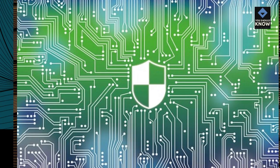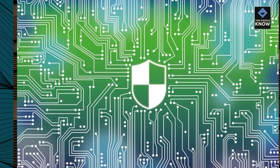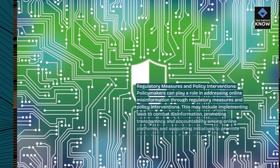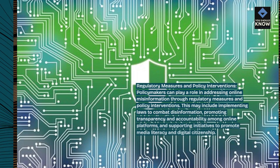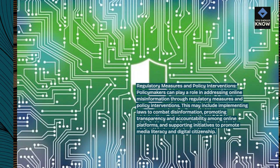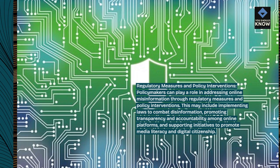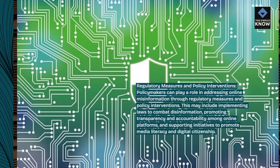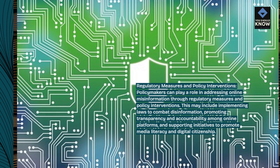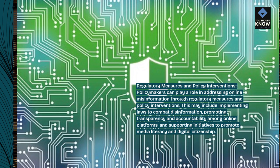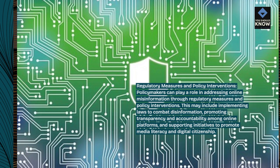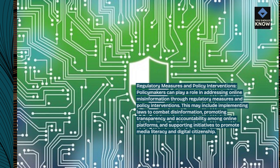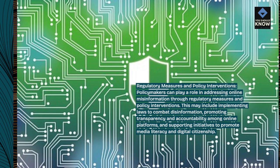Regulatory measures and policy interventions. Policymakers can play a role in addressing online misinformation through regulatory measures and policy interventions. This may include implementing laws to combat disinformation, promoting transparency and accountability among online platforms, and supporting initiatives to promote media literacy and digital citizenship.